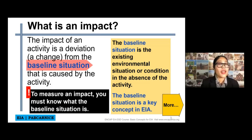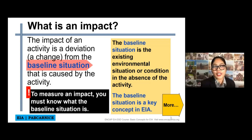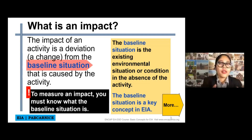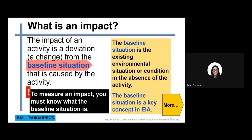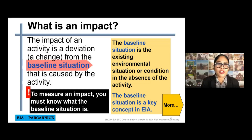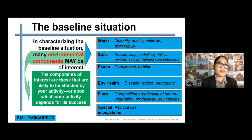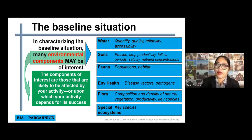The baseline situation is the existing environmental conditions in the absence of the activity. That is why in every environmental impact statement report, there is always baseline information or a baseline study. To measure an impact, we must know what the baseline situation is — we must have a reference point, because how can we compare what happened to a certain area after the project if we don't have any baseline? The baseline situation is the key concept in EIA, composed of the environmental components that are likely to be affected by your activity or upon which your activity depends for its success.